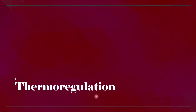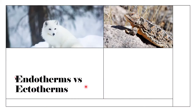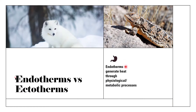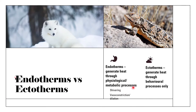Today's video is on thermoregulation. First, we have to look at the difference between endotherms and ectotherms. Endotherms are organisms that generate heat through physiological or metabolic processes. Ectotherms are organisms that generate heat through behavioral processes only, such as reptiles that lie in the sun, obtain heat from the ground, or shelter — through behavioral rather than metabolic or physiological processes.